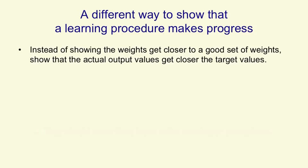For multilayer nets, we need a different way to show that the learning procedure makes progress. Instead of showing that the weights get closer to a good set of weights, we show that the actual output values get closer to the target output values.